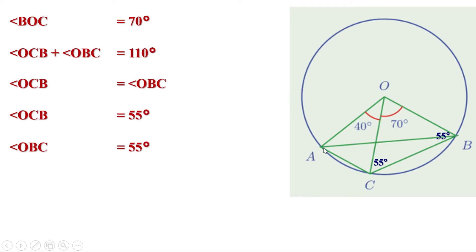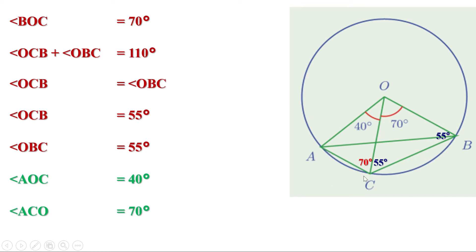To find the angles of triangle ABC, look at triangle AOC. One angle is 40 degrees, so the sum of the other two is 140 degrees. Since OA and OC are equal, the two base angles are equal, making each 70 degrees. Therefore angle ACB equals 55 plus 70, which is 125 degrees.